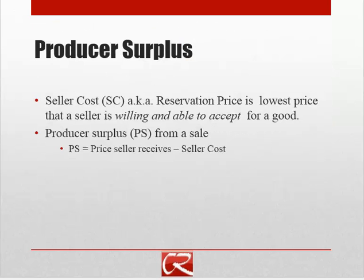On the other side of the market, we have the economic benefit that producers get from participating in the market. We need to think about producers' costs, or their reservation price — the lowest price a seller is willing and able to accept for a good. You see this term used in auctions where someone sets a minimum price: if no one bids above this, they're not selling. So producer surplus from a sale is the amount the seller actually gets paid minus their costs. If you get paid $10 for something and it costs you $3 to supply it, you have a net benefit of $7.